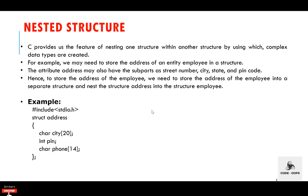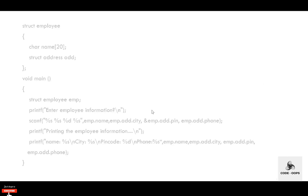For example, we may need to store the address of an entity employee in a structure. The attribute address may also have subparts such as street number, city, state, and pin code. So to store the address of the employee, we need to store the address into a separate structure and nest the structure address into the structure employee.